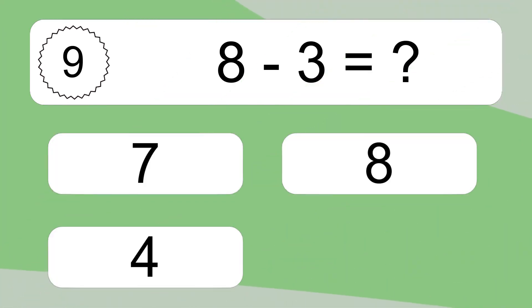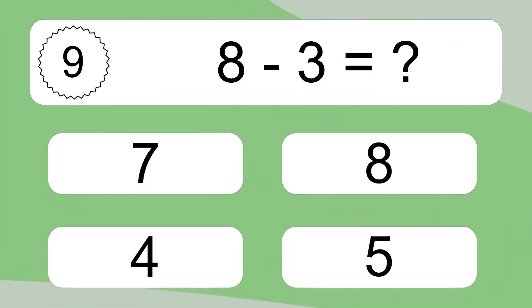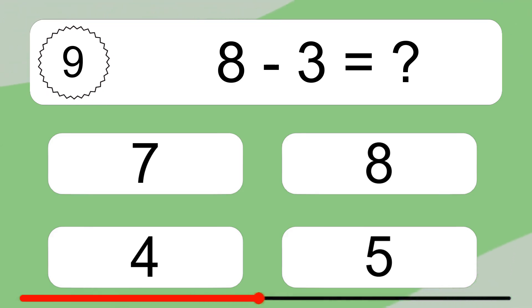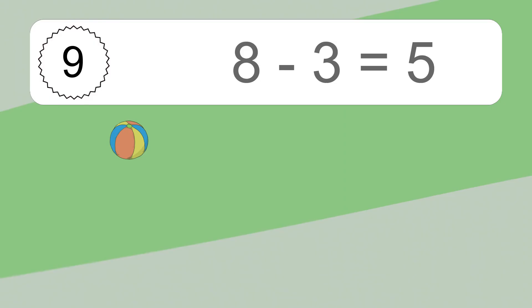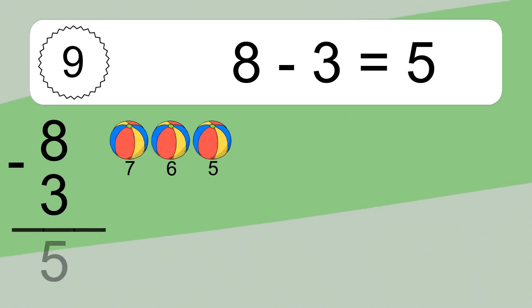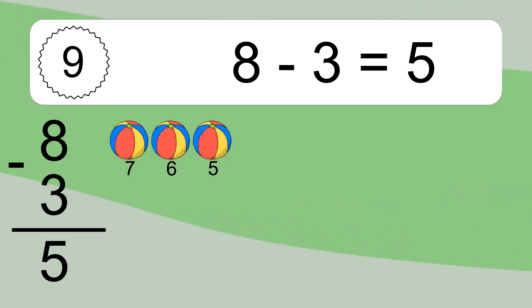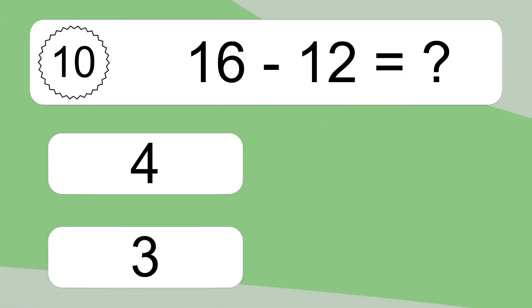8 minus 3 equals what? 8 minus 3 equals 5. Let's count it: 7, 6, 5. 16 minus 12 equals what?